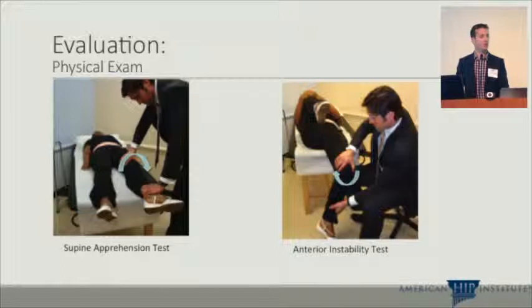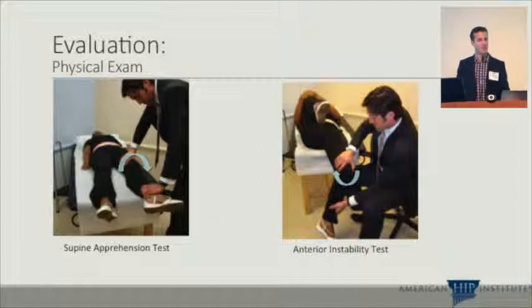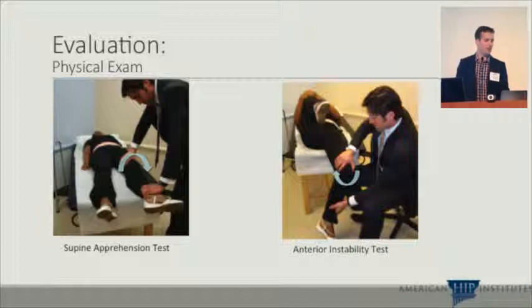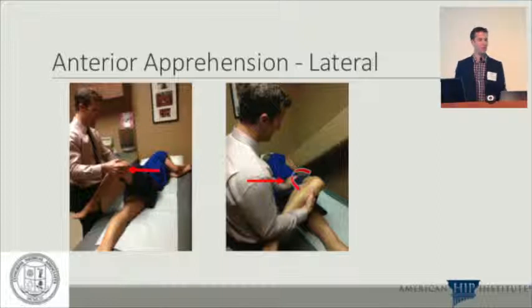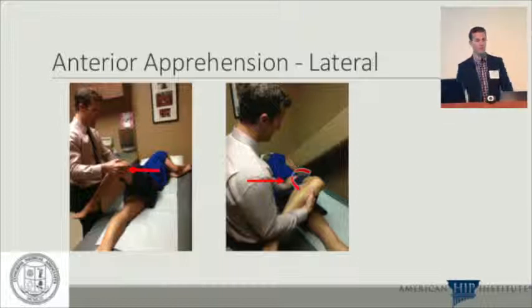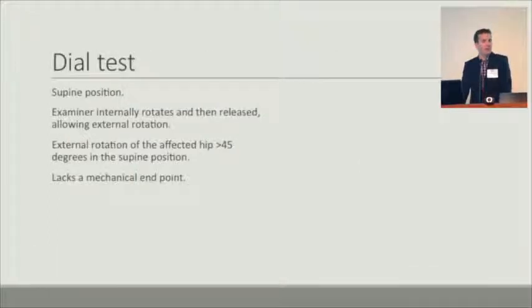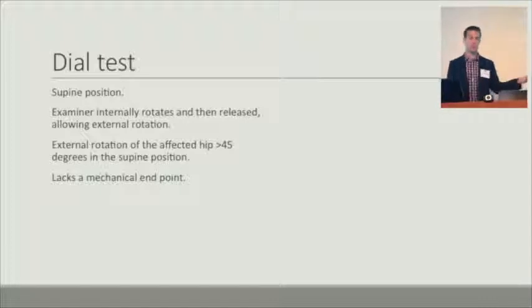On physical exam, specific maneuvers — this is Dr. Dunham demonstrating: the supine apprehension test and the anterior instability test, where you're putting a force on the femoral head anteriorly. I like to do it in the lateral decubitus position with my hand on the greater trochanter, pushing anteriorly with my left hand while pulling back and externally rotating with my right to provide a lever moment. The dial test has also been advocated: in the supine position, the examiner internally rotates then releases the legs; if one foot flops out greater than 45 degrees, that's considered positive for a lax mechanical endpoint.